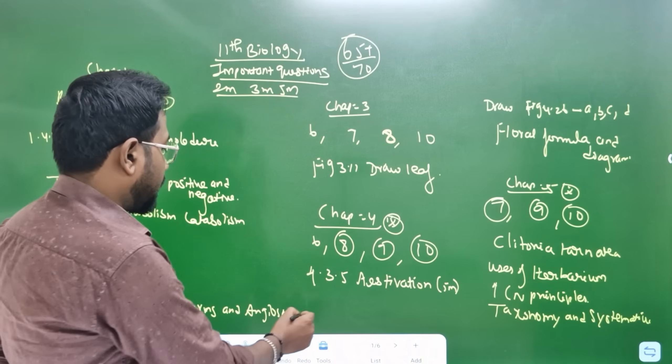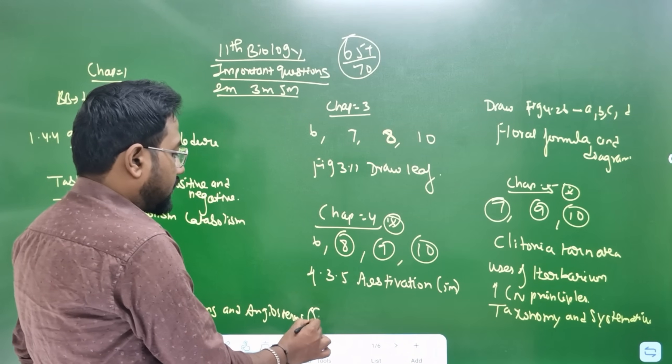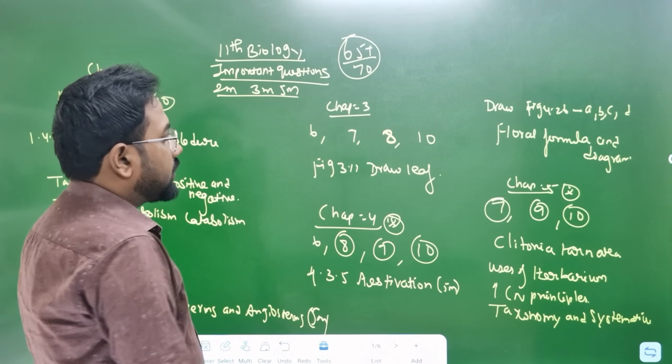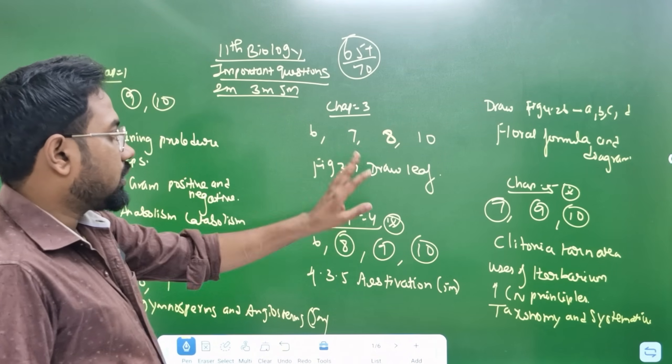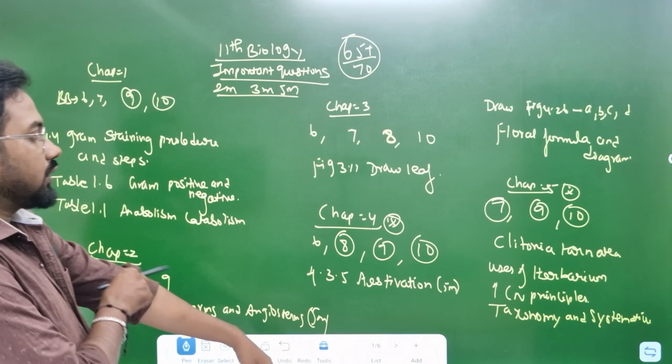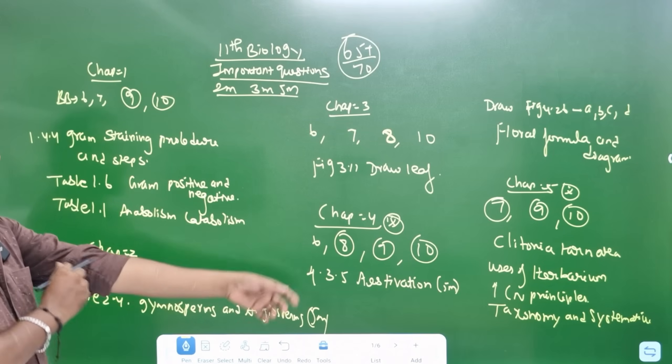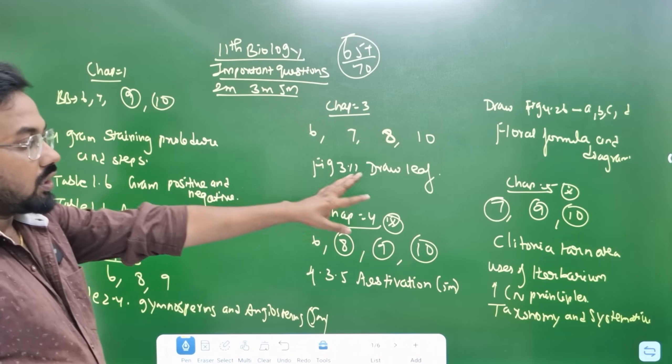Chapter 3 is sections 6, 7, 8. Figure 3.11 is draw leaf.